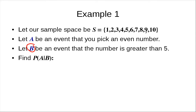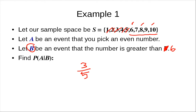First we know B occurs, so we eliminate all outcomes not in event B — anything five or below is gone. You're left with 6, 7, 8, 9, 10. What's the probability of picking an even number from those? There are three even numbers — 6, 8, 10 — so it's 3 over 5. Now suppose I change the condition from 'greater than five' to 'greater than six' — what would it be?